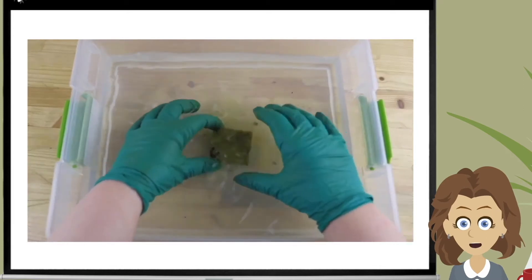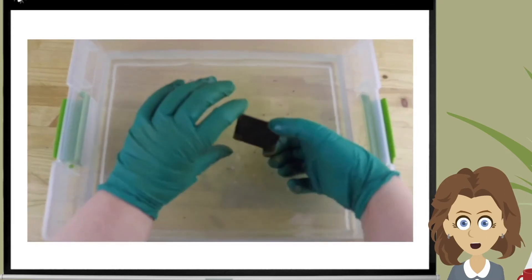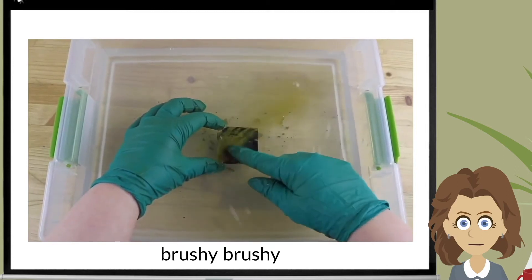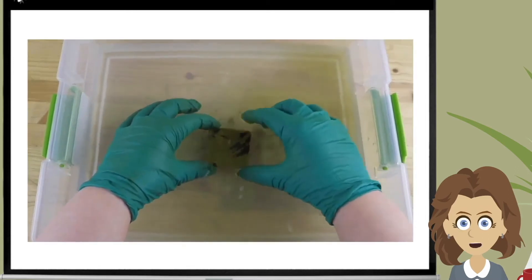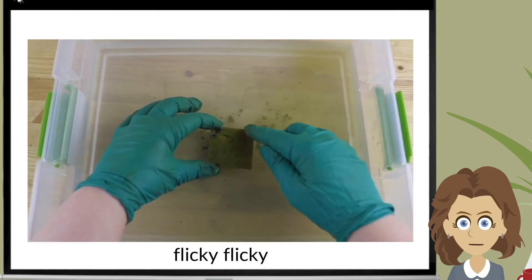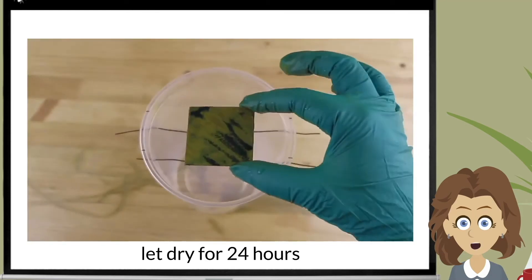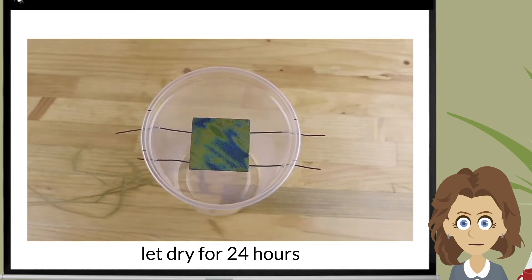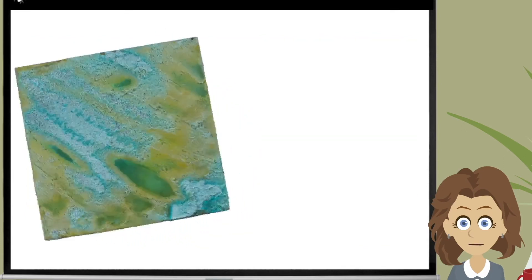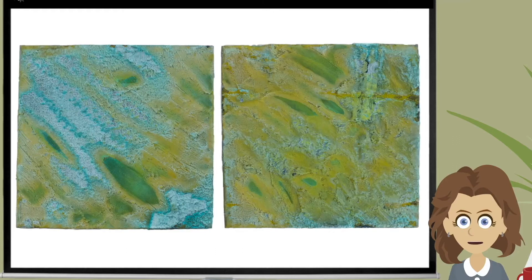A little more shaky-shaky. Flipped the patina over. A little more brushy-brushy. And more shaky-shaky. And some flicky-flicky. Then let dry for 24 hours. And the result? Who would have thought this vibrant patina was hiding under that dark crust?